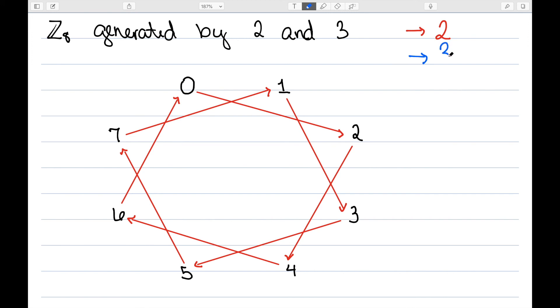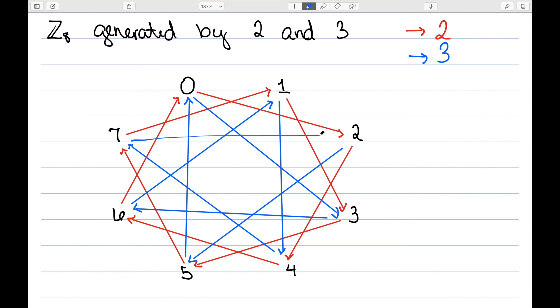I'm going to let a blue arrow denote 3. 0 plus 3 is 3. 1 plus 3 is 4. 2 plus 3 is 5. 3 plus 3 is 6. 4 plus 3 is 7. 5 plus 3 is 8, which is the same thing as 0. 6 plus 3 is 9, which is the same thing as 1. And 7 plus 3 is 10, which is the same thing as 2. So now everything has a blue arrow coming both in and out of it. So this is my Cayley graph.